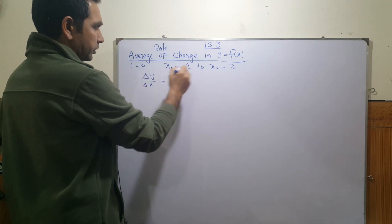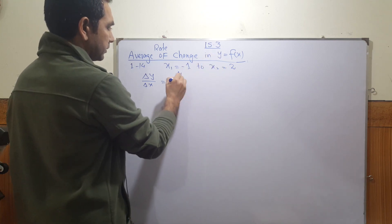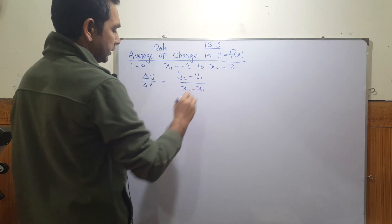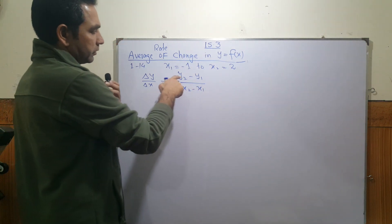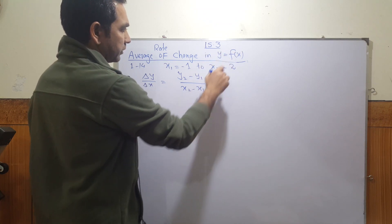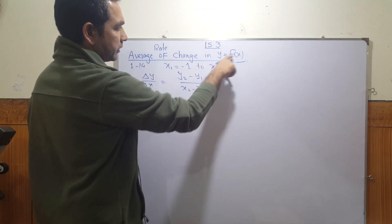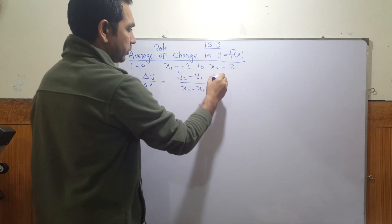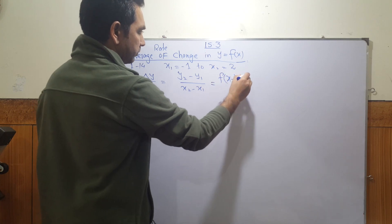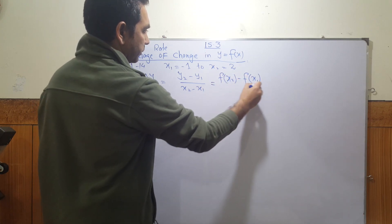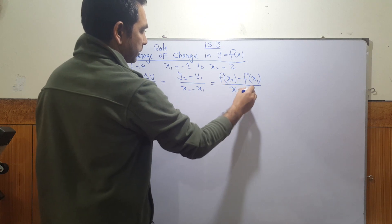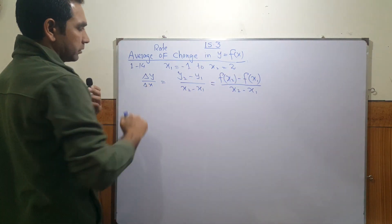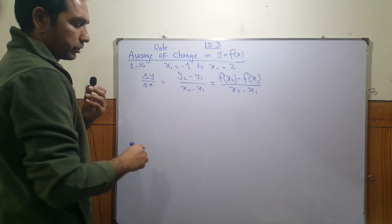You can write this as y₂ minus y₁ over x₂ minus x₁. If we use this function, putting x₁ gives y₁ and putting x₂ gives y₂, so y₂ becomes f(x₂) minus y₁ which is f(x₁), divided by x₂ minus x₁. Now for any function, you can find the average rate of change.